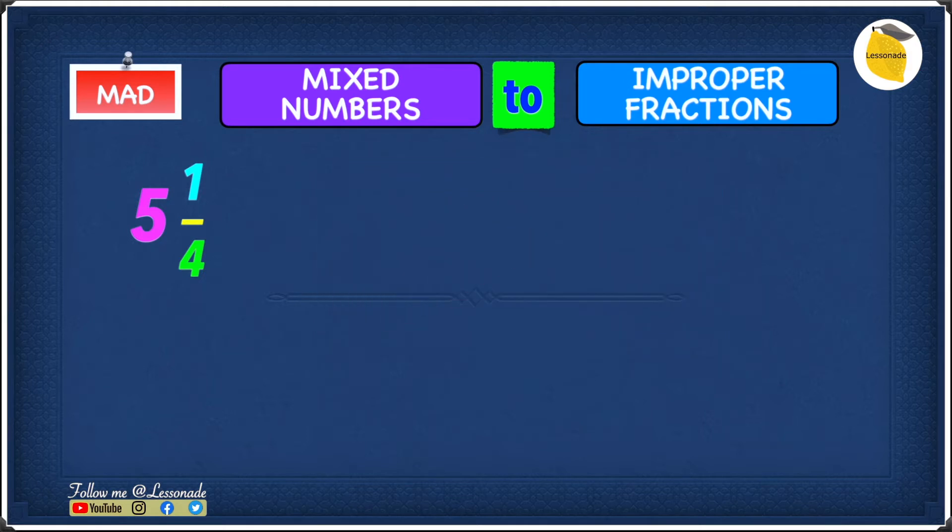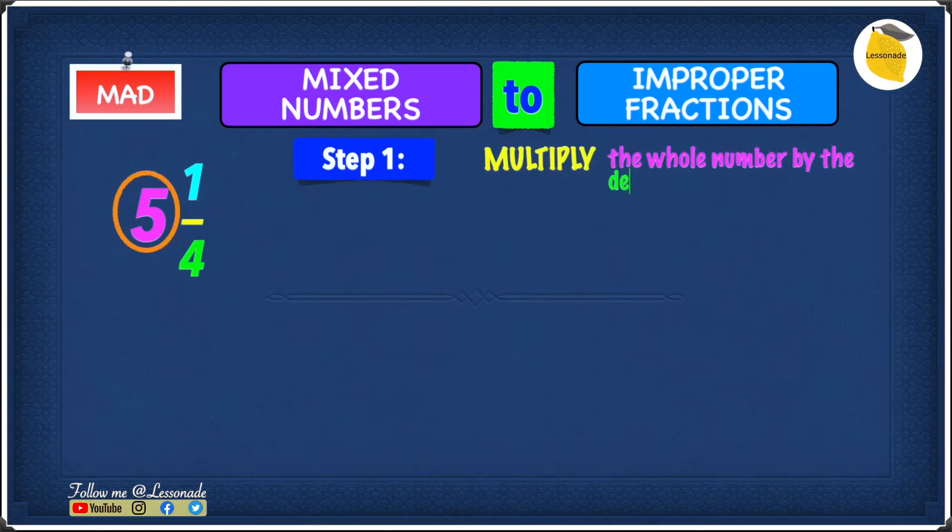To convert this into an improper fraction, step 1 is going to be to multiply the whole number, which is 5, by the denominator, which is 4. So 5, which is the whole number, times the denominator, which is 4. 5 times 4 is going to give you 20.